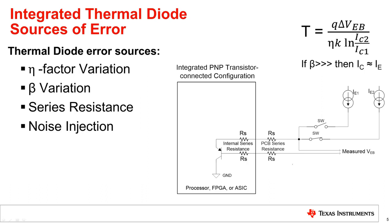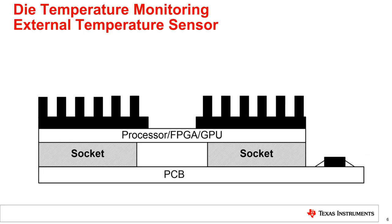TI's remote temperature sensor products can correct for most of these error sources. If there is not a suitable thermal diode, an external temperature sensor can be used to monitor the die temperature. Examples of external temperature sensors include local temperature sensor ICs, thermistors, or discrete transistors with a digital remote temperature sensor.